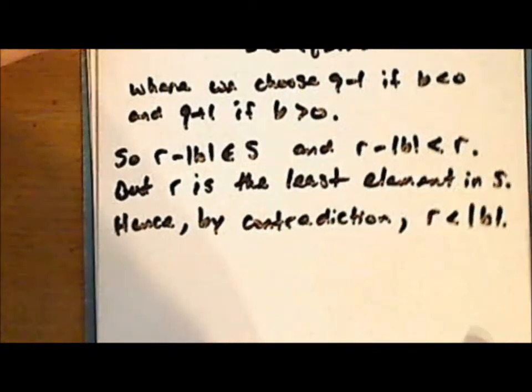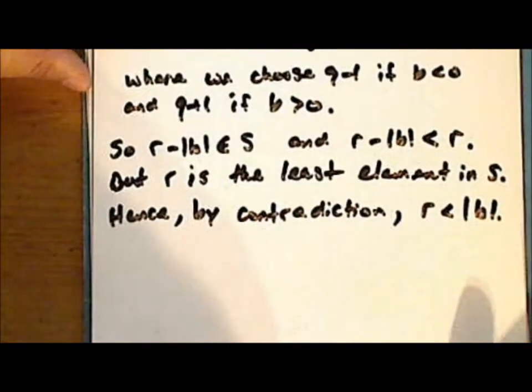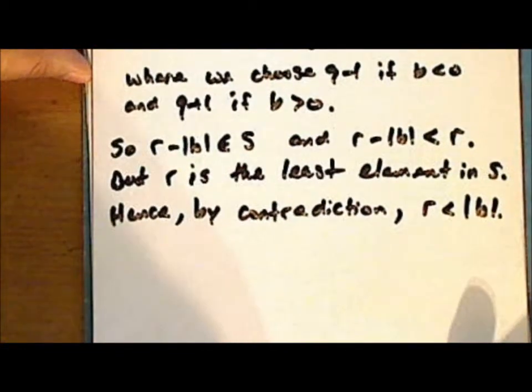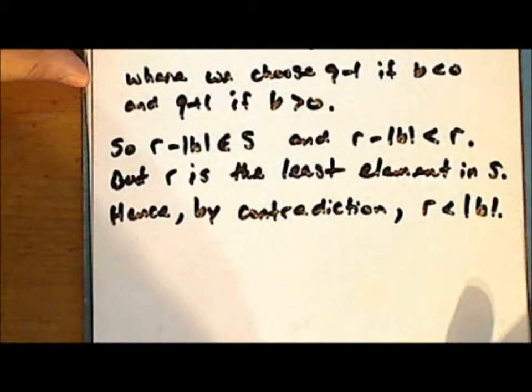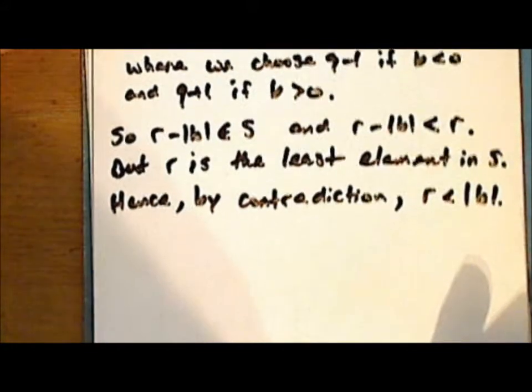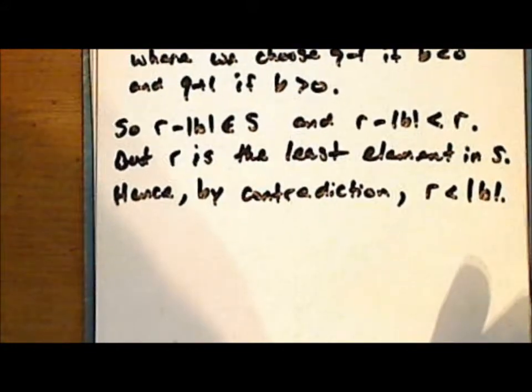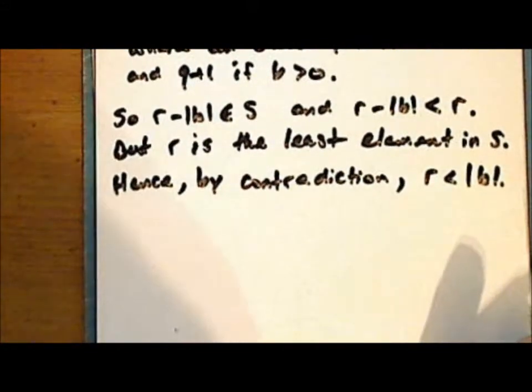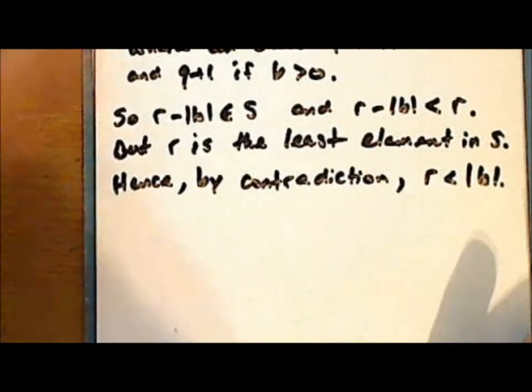We have demonstrated the existence of the integers q and r in the theorem. So now we need to demonstrate that they are unique.